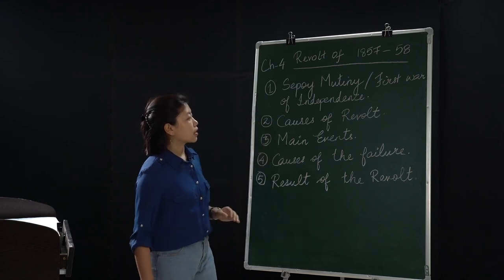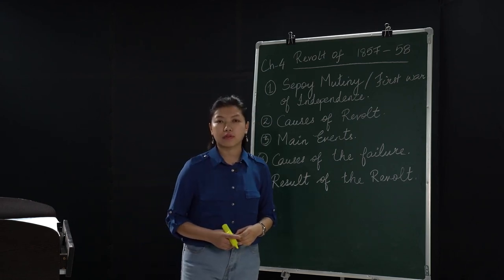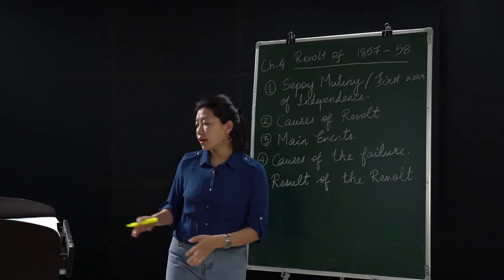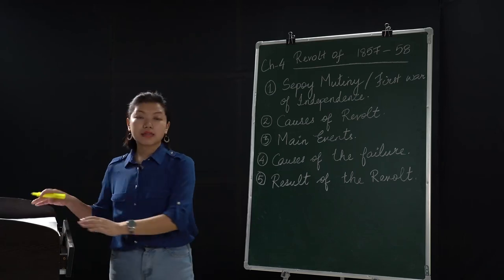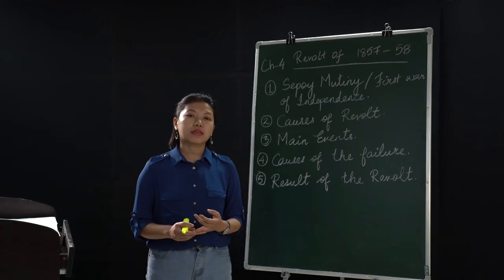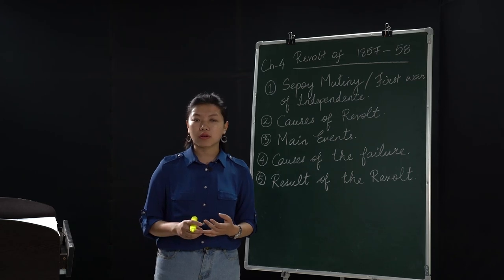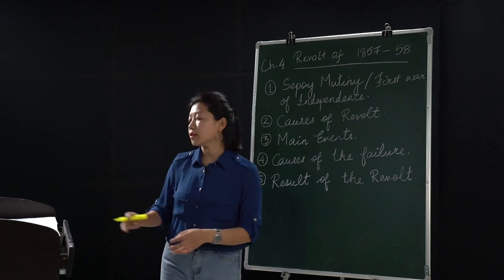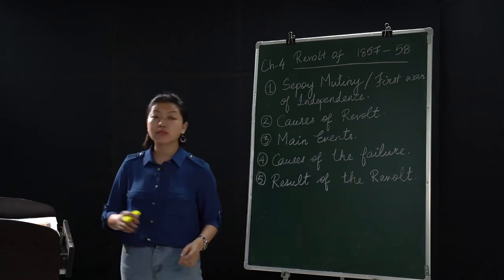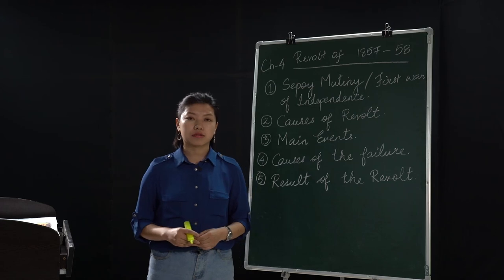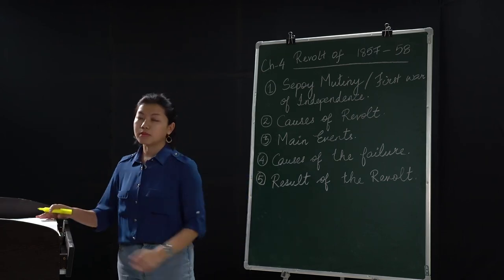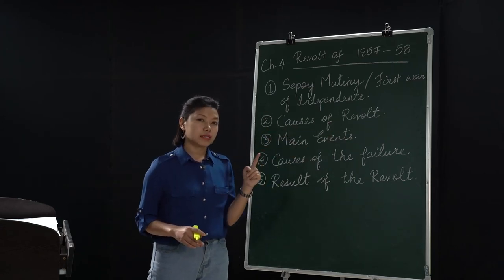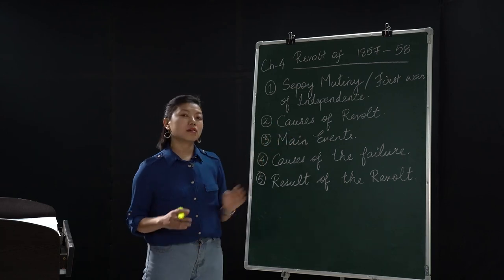Now let's look at the second point — the Causes of Revolt. Under the Causes of Revolt, there are five main causes: the political cause, the social and religious cause, the military cause, the economic cause, and the immediate cause. Let me explain the political cause first.